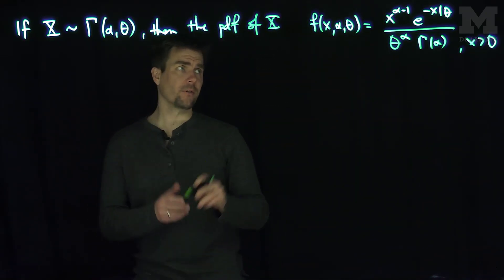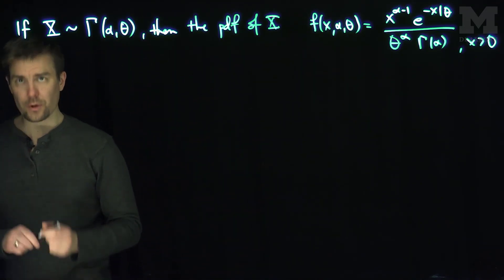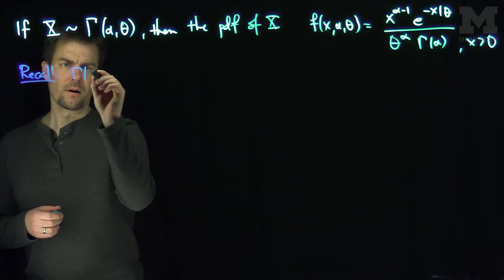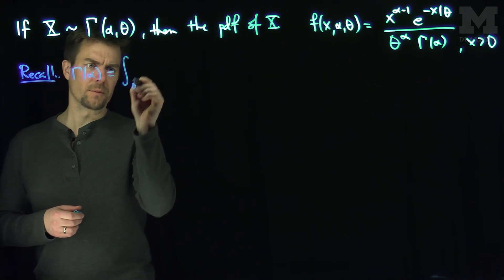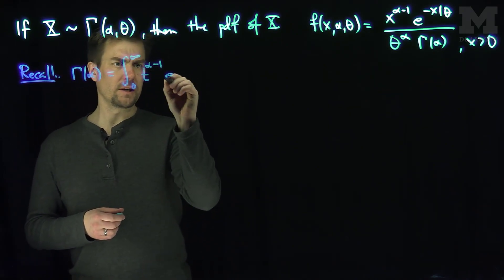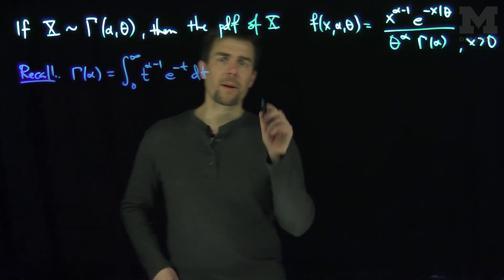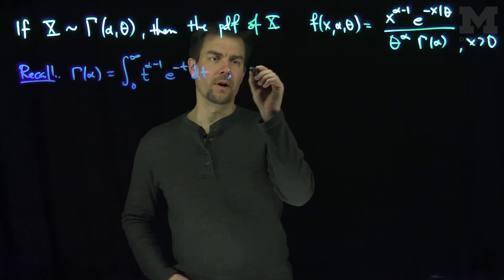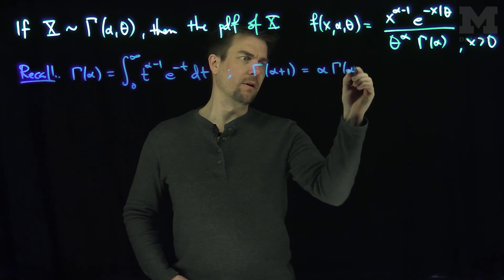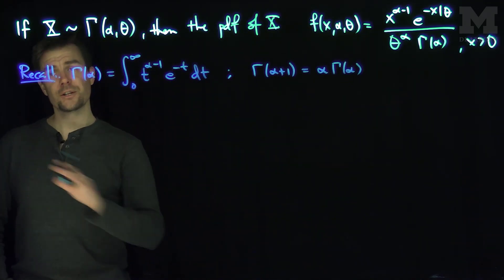I'd like to find the moment-generating function of these random variables. To do that, we have to remember some properties of the gamma function. Recall that gamma of alpha is the integral from zero to infinity of t to the alpha minus one, times e to the negative t, dt. This is the gamma function, and it has a very special property: gamma of alpha plus one is equal to alpha times gamma of alpha, which follows by integrating by parts. This mimics a factorial in a general sense.